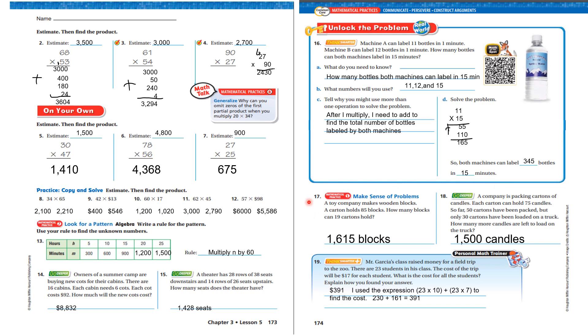A toy company makes wooden blocks. A carton holds 85 blocks. How many blocks can 19 cartons hold? Well, 85 times 19 is 1,615 blocks.